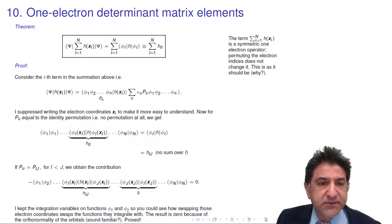The ith term in the middle will have phi i, I've written it here, integrated with h of xi and phi i. All these other ones don't involve h of the ith electron because we're only considering the ith electron in here.